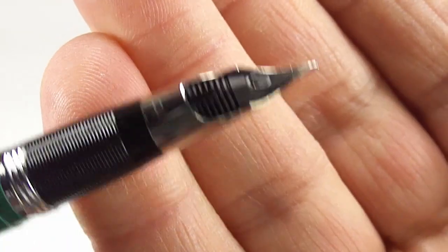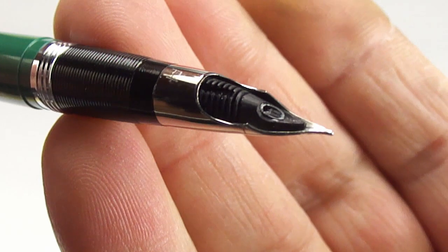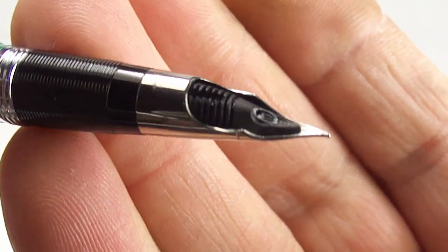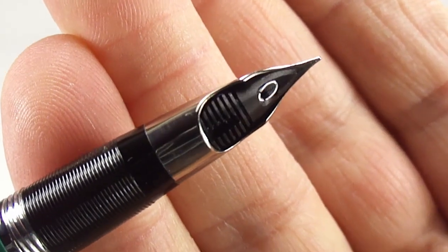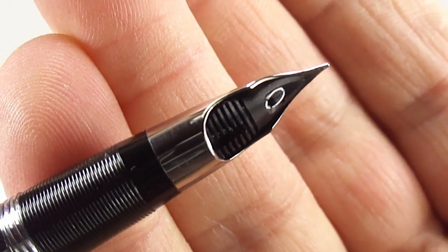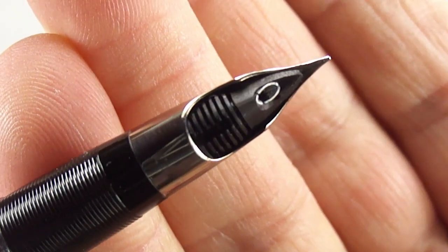So again, a little bit confusing. If we keep it still, you'll see it reads Schaefer, registered US Pat Office, and then to the very bottom, made in USA. Let's show you the feed underneath. There's the feed, and you can see the snorkel is sat nice and comfortably, as it should be, just inside the feed there.